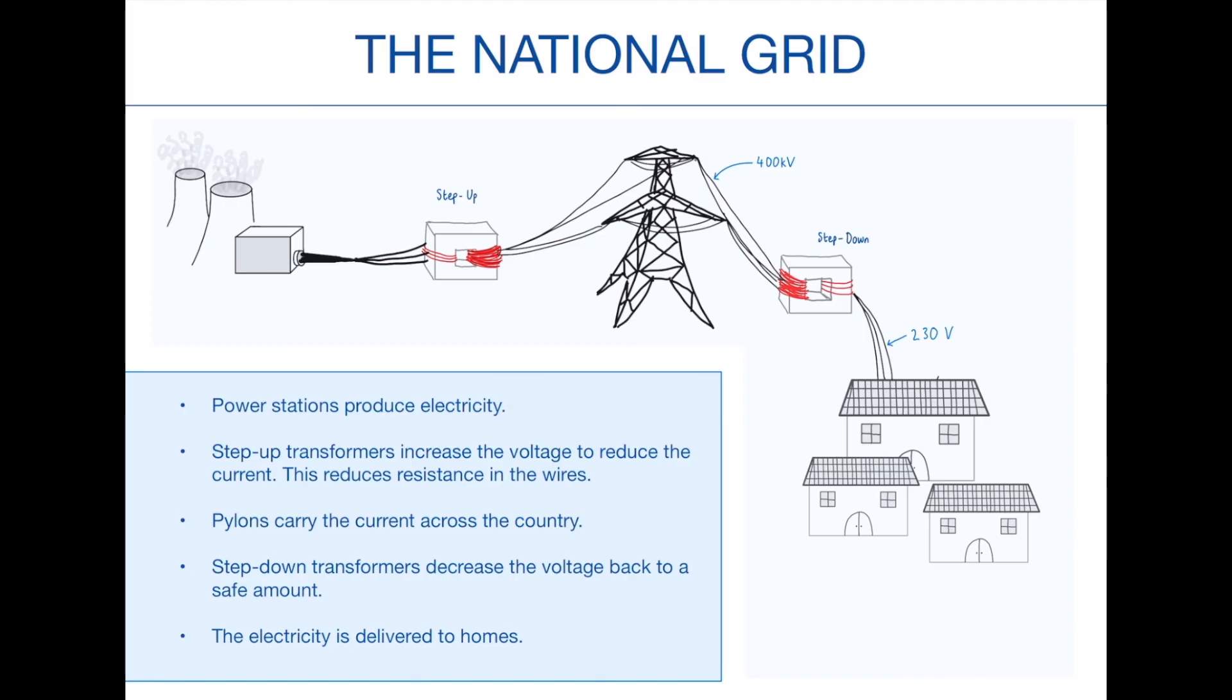The step-up transformer will increase the voltage in these wires to about 400 kilovolts or 400,000 volts. This is why pylons and all the wires through the countryside and stuff are very dangerous, so you should not go near them. Once they have travelled across to where they need to get to, a step-down transformer is used, which reduces the voltage back down to a much safer 230 volts on average, which again will increase the current. But we don't worry too much about that anymore because it doesn't really have to travel far to get to the houses. And then finally, the electricity is delivered into the houses so that people can use it.